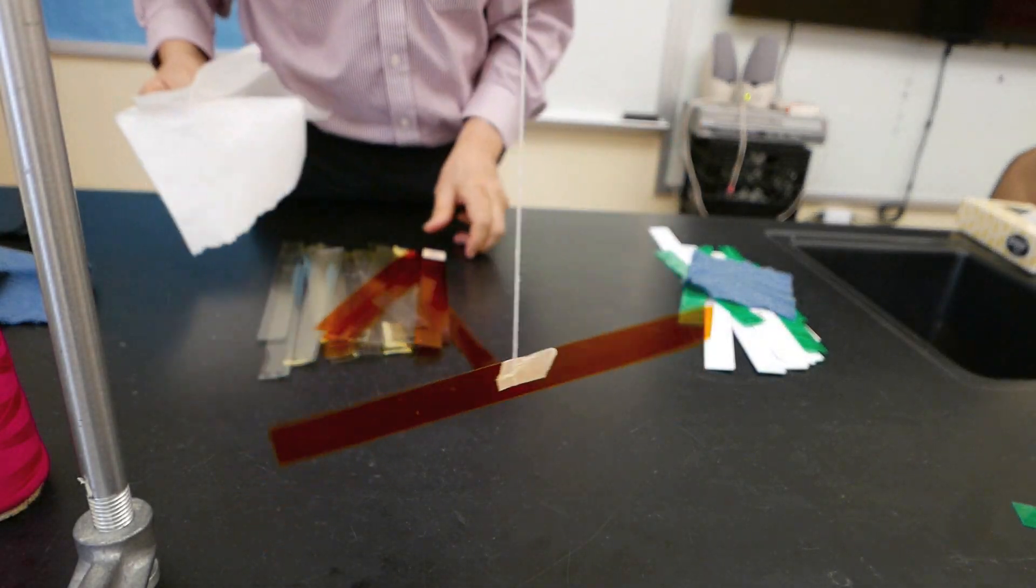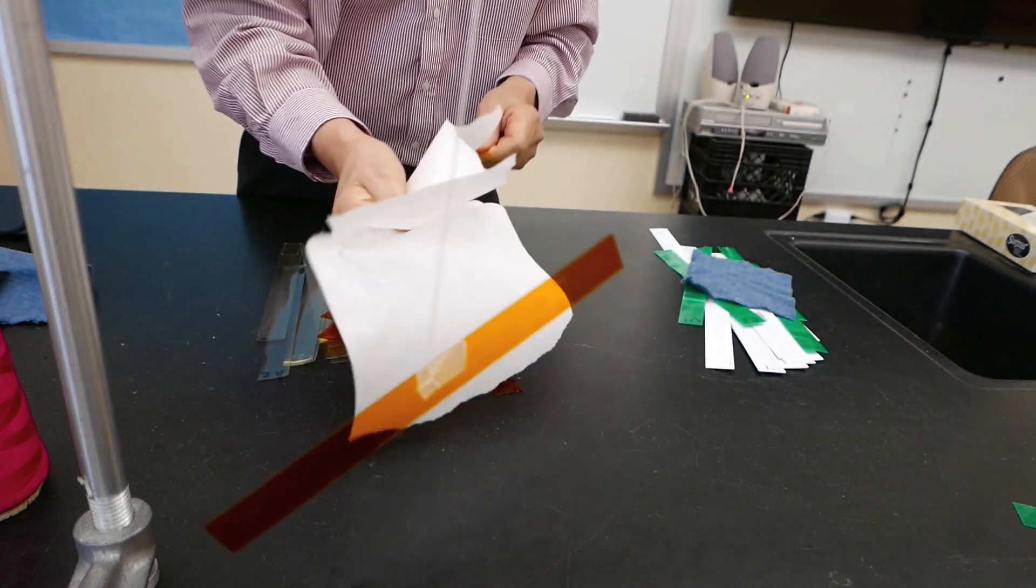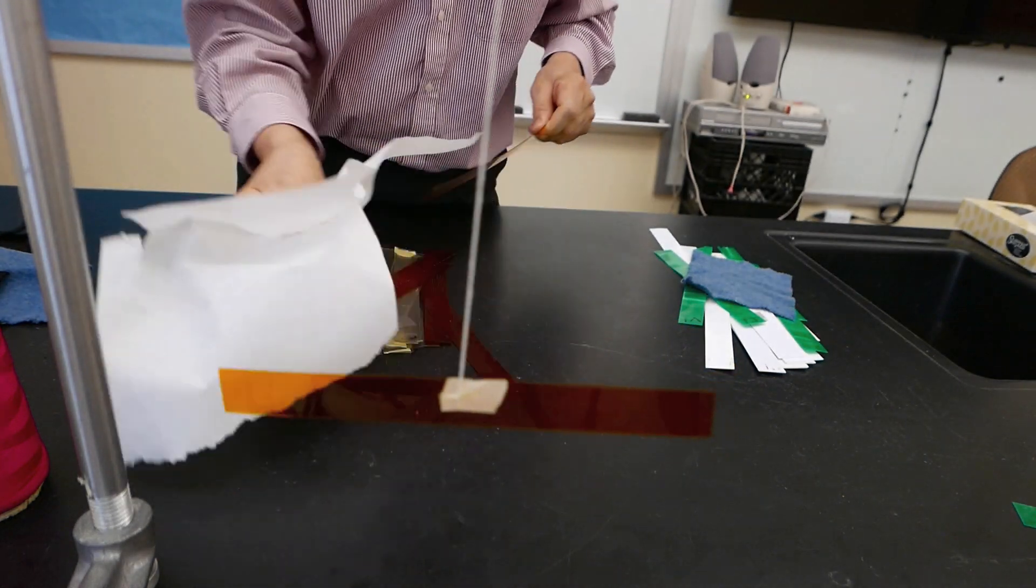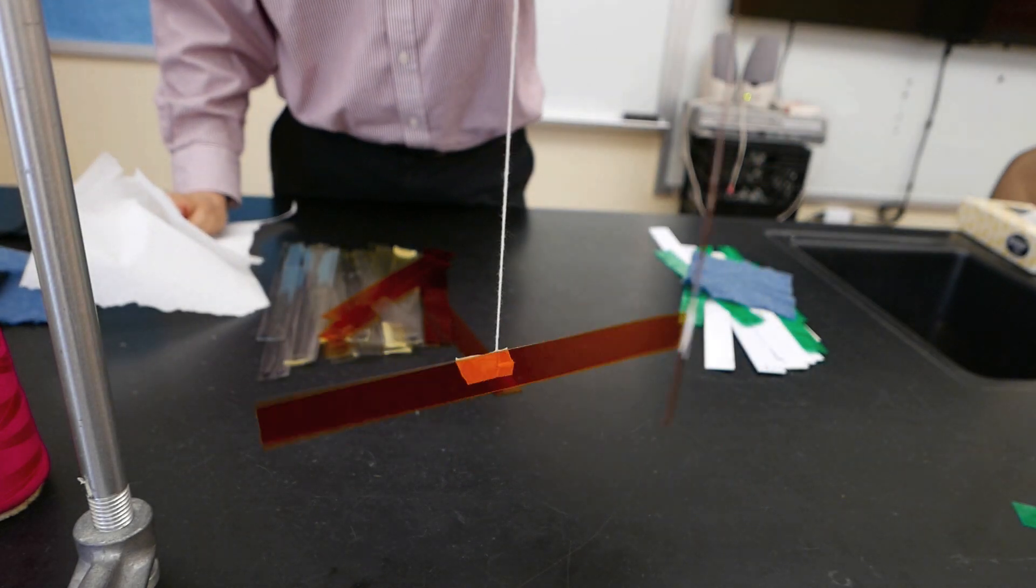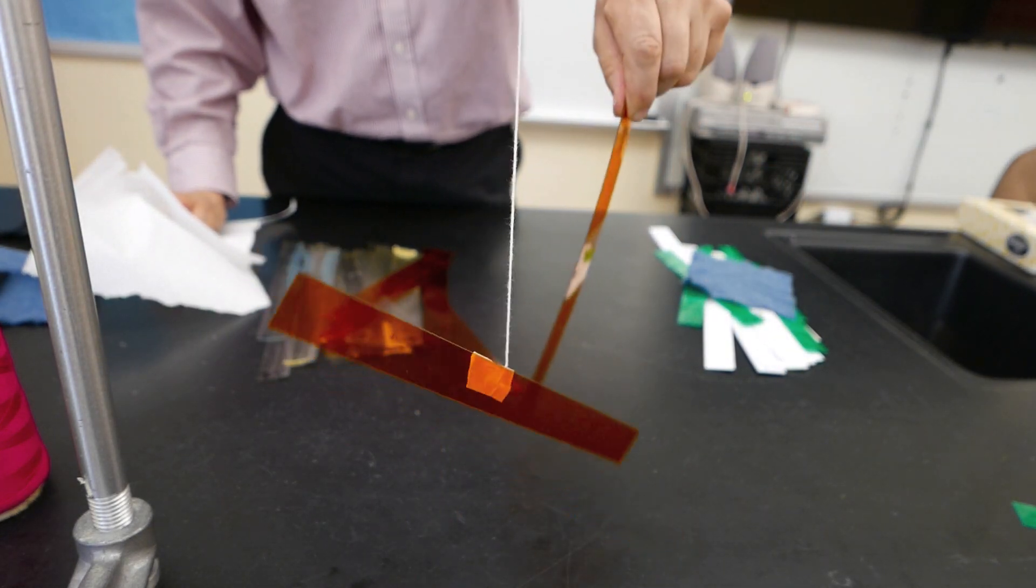Now once again I want to rub both strips. And I'll rub the second one here. Here we go. And once again we see the acetate pushing away the acetate.